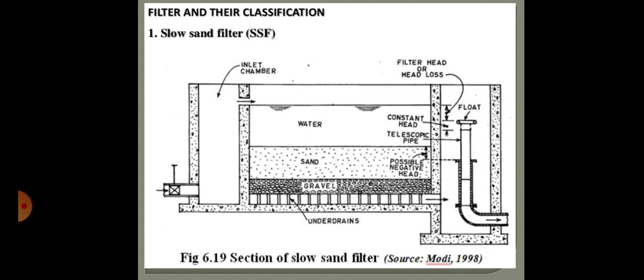In the working of a slow sand filter, impurities in the water are removed by a combination of processes: sedimentation, straining, absorption, and chemical and bacteriological action. During the first few days, water is purified mainly by mechanical and physicochemical processes. The resulting accumulation of sediment and organic matter forms a thin layer on the sand surface, which acts as a straining mat while remaining permeable, retaining particles smaller than the spaces between sand grains.